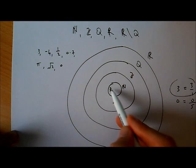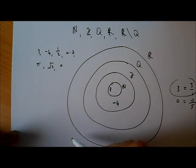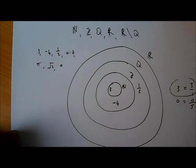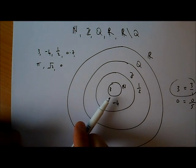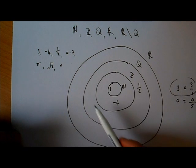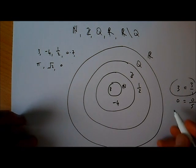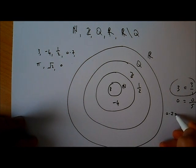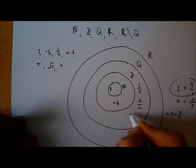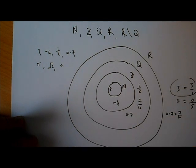What about a half? Is a half a natural number? No. Is it an integer? No. Is it a rational number, a fraction? Yes, it is. So a half will go in the rational number section. What about 0.7? It's not a natural number, it's not an integer. Is it a fraction? Well, 0.7 is a fraction because 0.7 can be written as 7 over 10. So it is a fraction, and 0.7, or 7 over 10, can go in the rational number section.